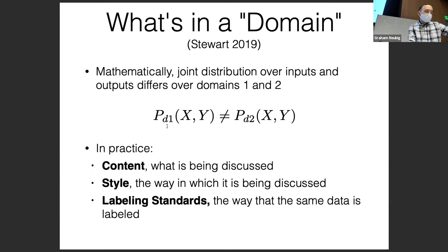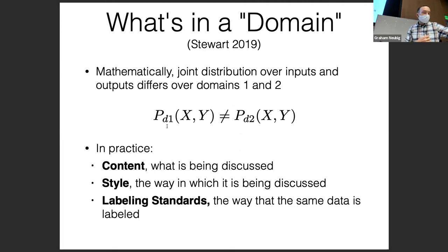A question from Zoom: is the mathematical definition of domain ever used in practice? It seems like the joint distribution would be different for most non-trivial cases — are difference measures such as KL divergence used, or is this just an illustration? That's a really good question. If I have time near the end, I can talk about this from the point of view of something called distributionally robust optimization — there's actually some pretty good theory about it.